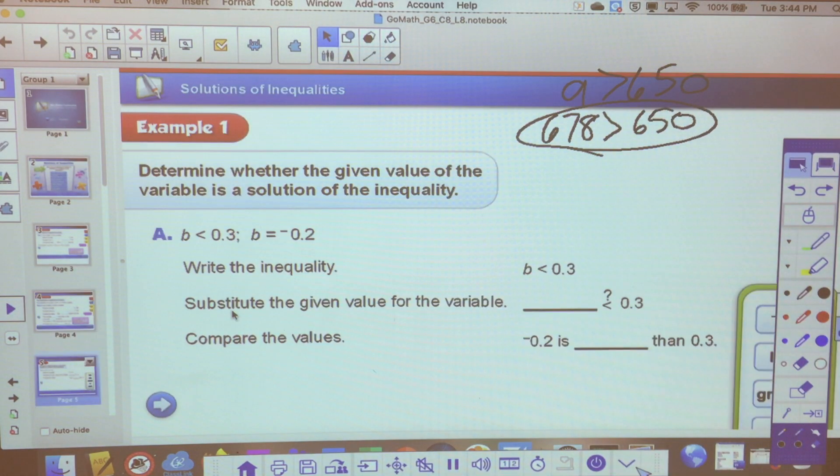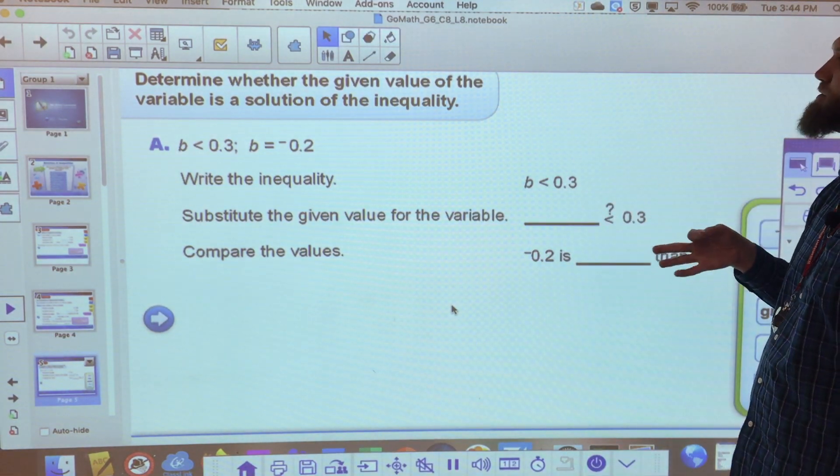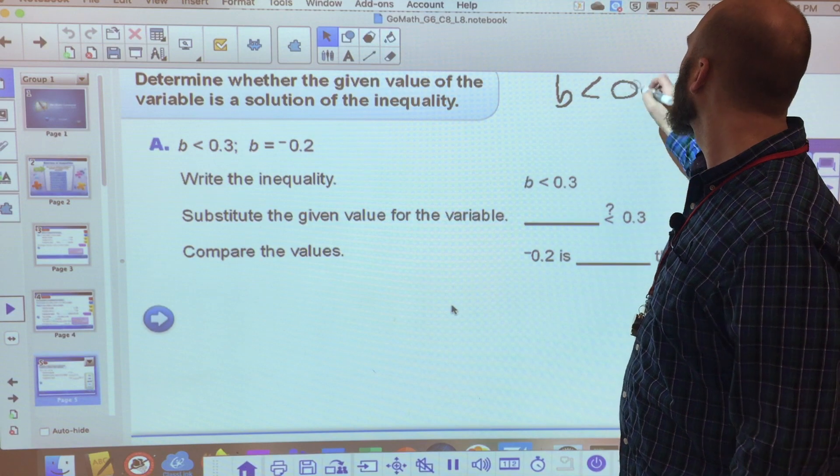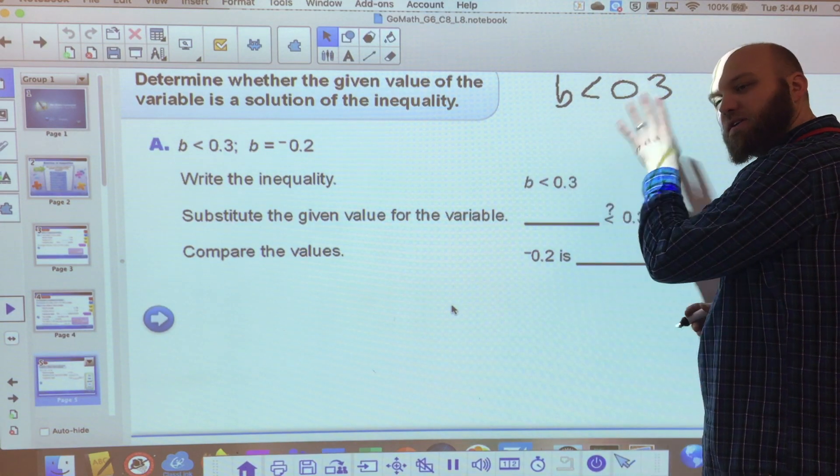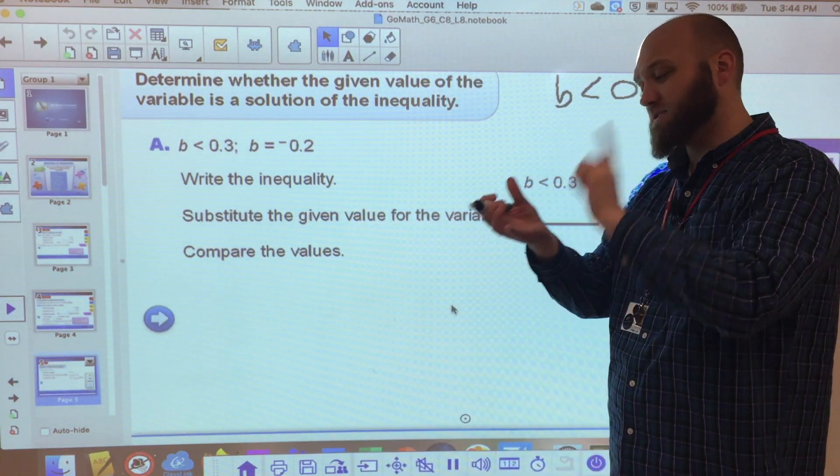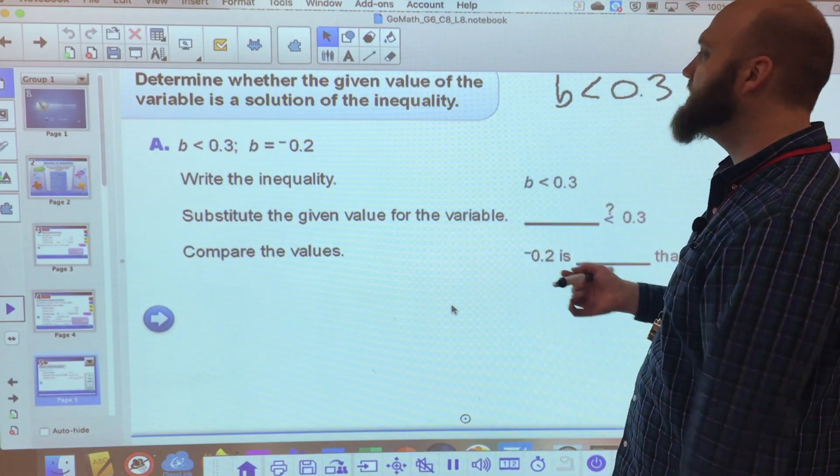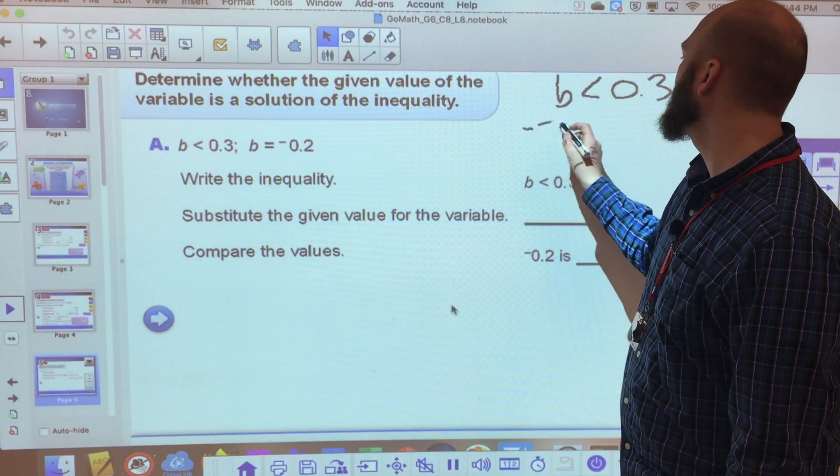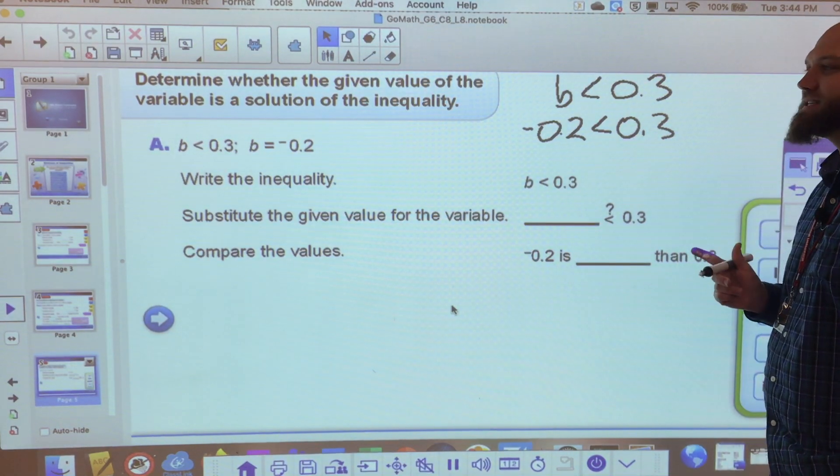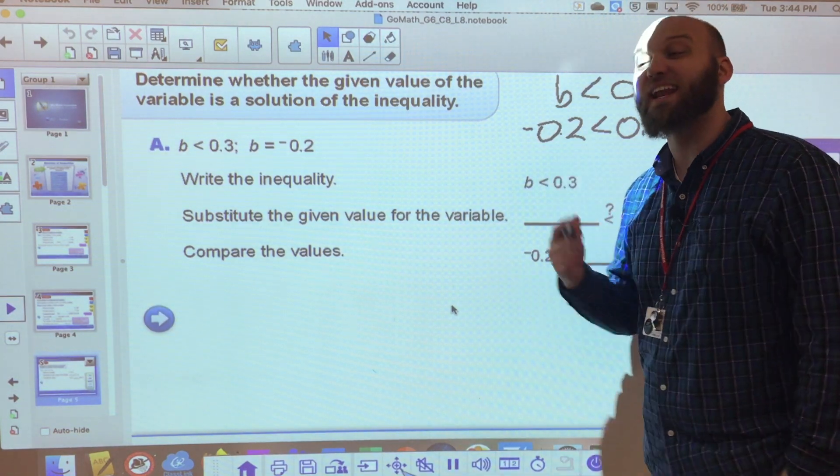Look at the next one. Determine whether the given value of the variable is a solution of the equality. So B is less than 3 tenths. Start with the expression or the equation or whatever you're working with. Then substitute, right? SPEMDAS. First thing you want to do in your parentheses, exponents, multiplication, is simplify and substitute. What can you do? Now B is equal to negative 2 tenths is less than positive 3 tenths. Is that true? Yes, it is. Any negative number is less than a positive number. So that is a solution.